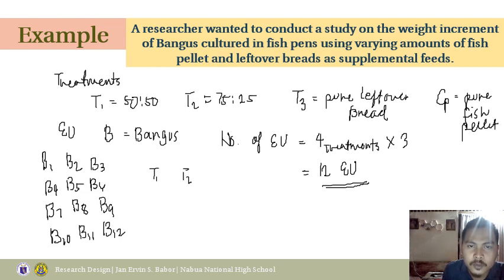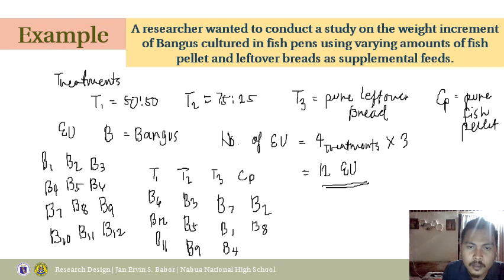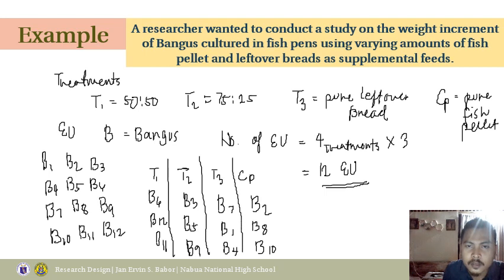Assign randomly to T1, T2, T3, and your positive control. For example: T1 gets B6, B12, B11; T2 gets B5, B9, B7; T3 gets B1, B4, B2; and the positive control gets B8, B10, and B3. You have followed the three basic principles of research design.